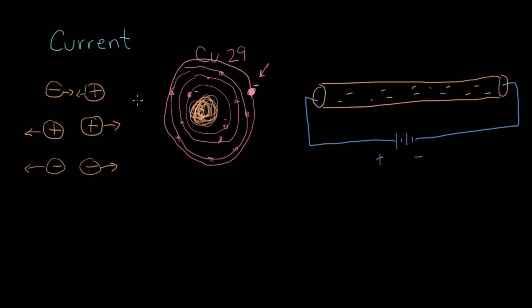An electron is going to wander over this way, and that's going to leave a net positive charge in this region. So these electrons are all going to start moving in this direction. At the other end, an electron is going to come out of the battery, travel in, and make up the difference. So if there's a net positive charge from electrons leaving, the battery fills those in. And we get a net movement of negative charge around in this direction.